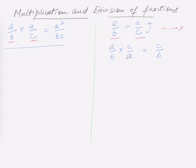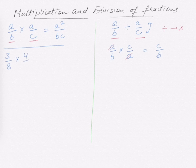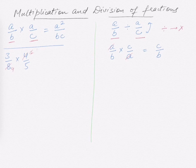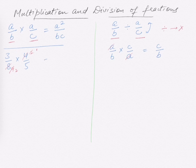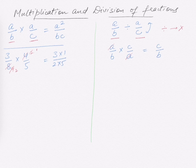Let's do a few examples — multiplication first. If we have 3/8 times 4/5, we can cancel 4 and 8: 4 ones are 4, 4 twos are 8, so 8 becomes 2. The answer will be 3 times 1 over 2 times 5, which is 3/10.